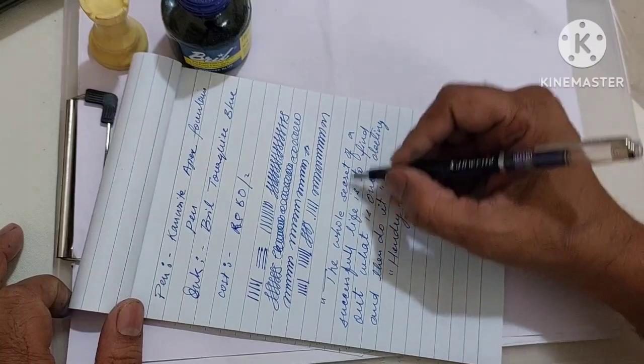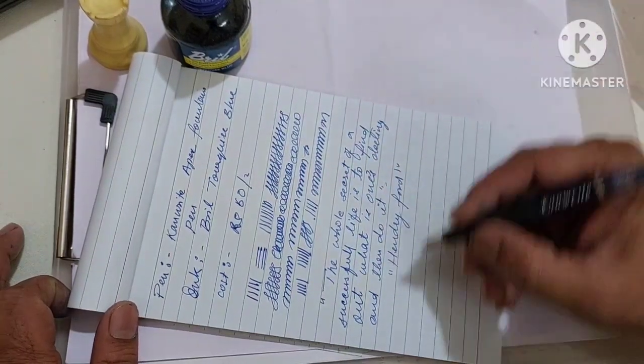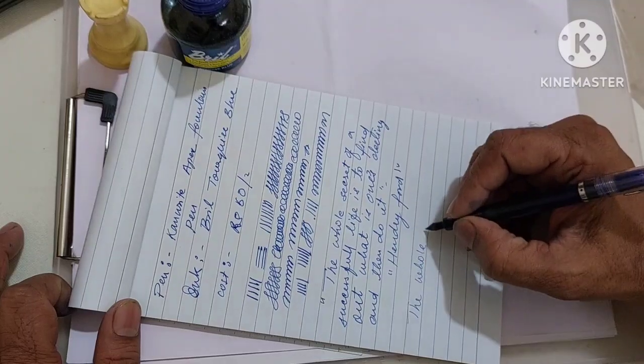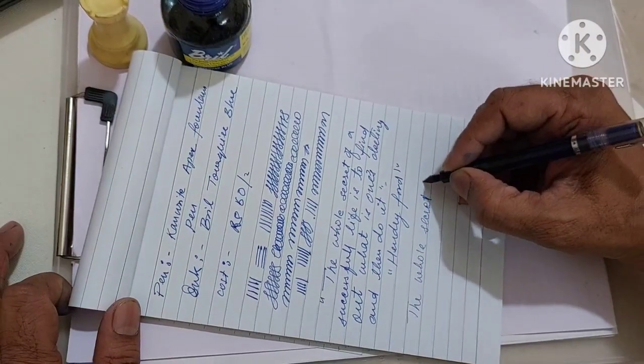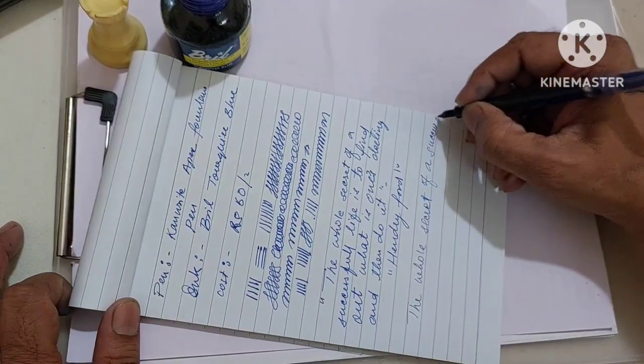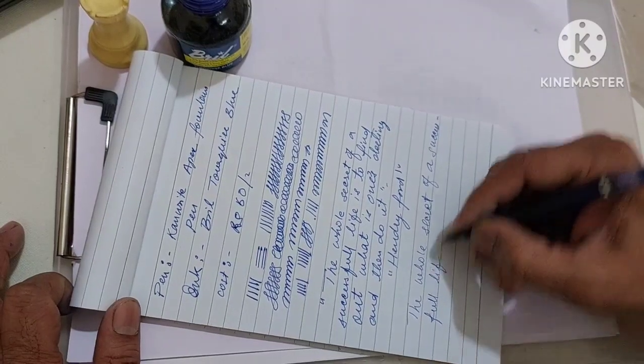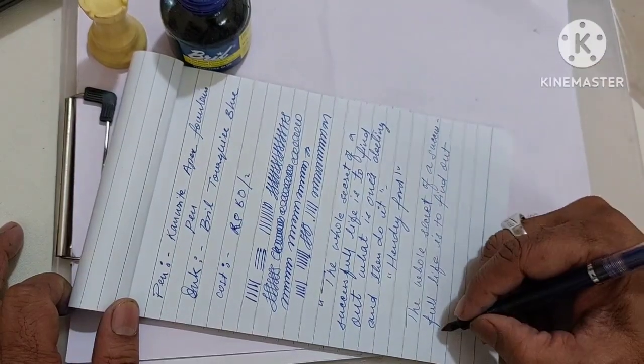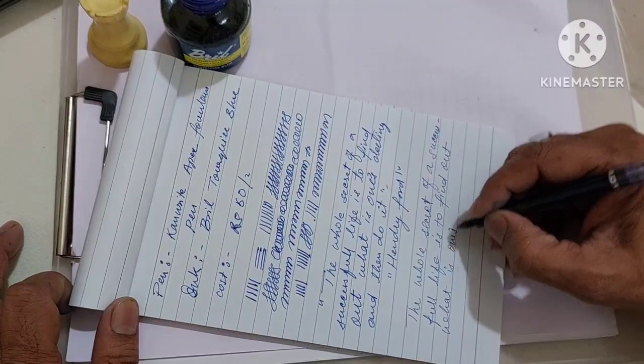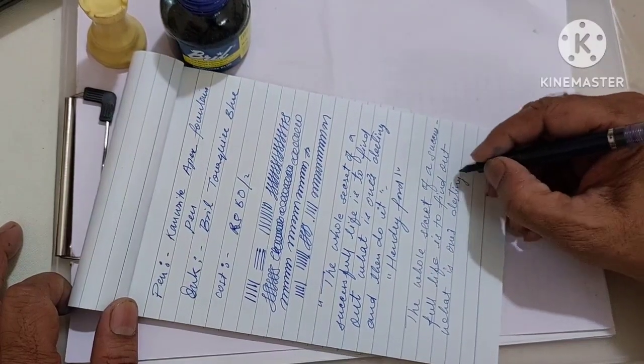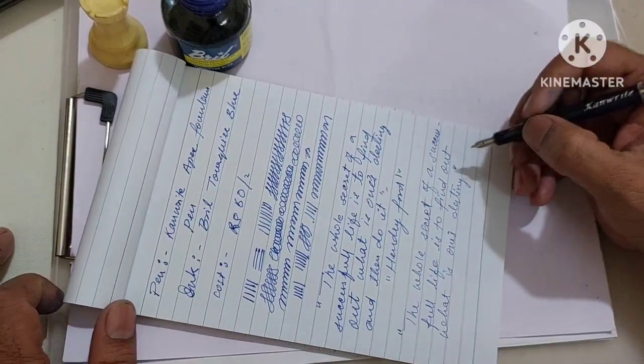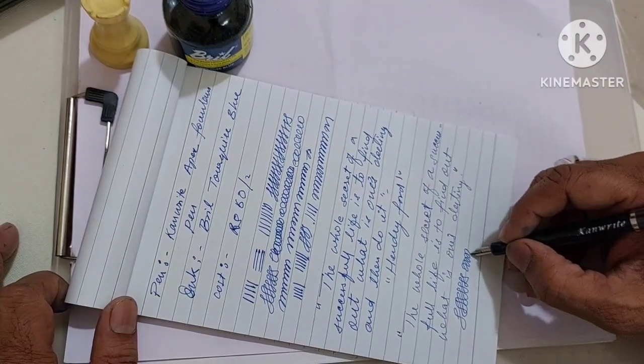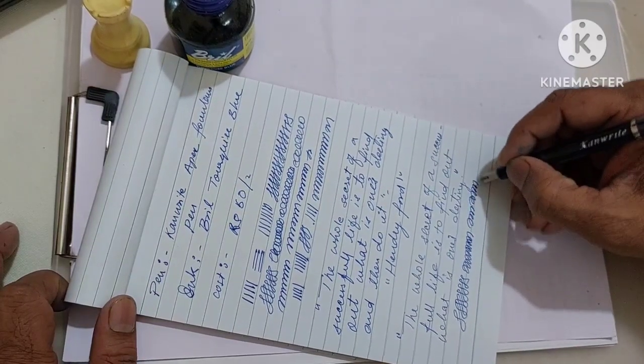So this is it, as you can see the pen writes pretty well and manages to balance. Let me see if it is writing backward. The whole secret of a successful life is to find out what is one's destiny. Yeah backward writing is also possible but it is too thin and too fine and scratchy. Apart from that it is writing very well as you can see, it is smoothly writing over the paper. You just hear the little scratchiness, that's it. Apart from that it is writing very nicely and smoothly.